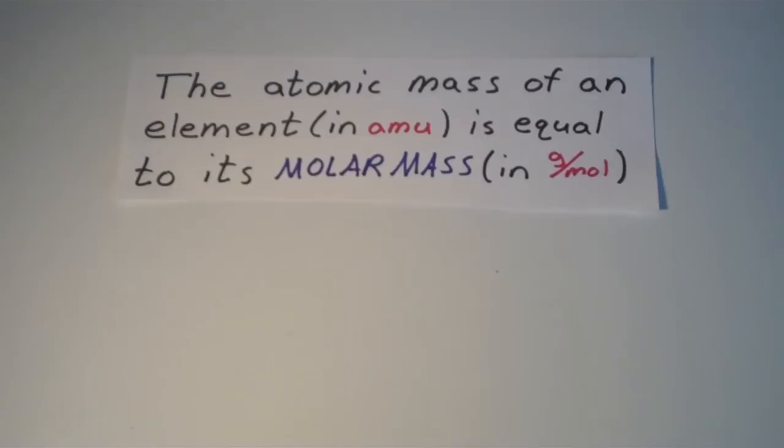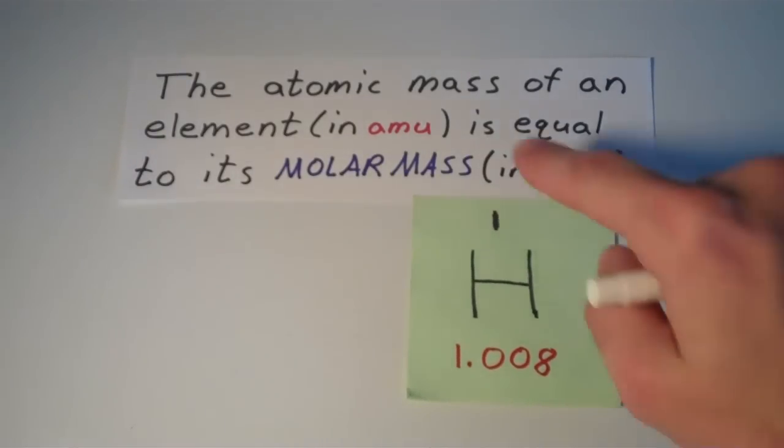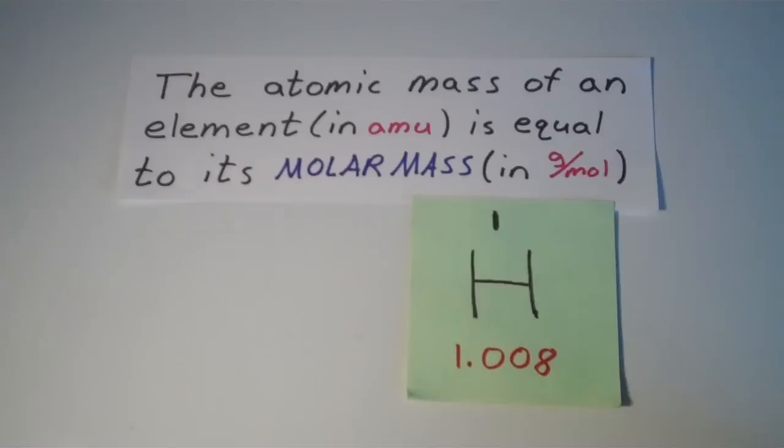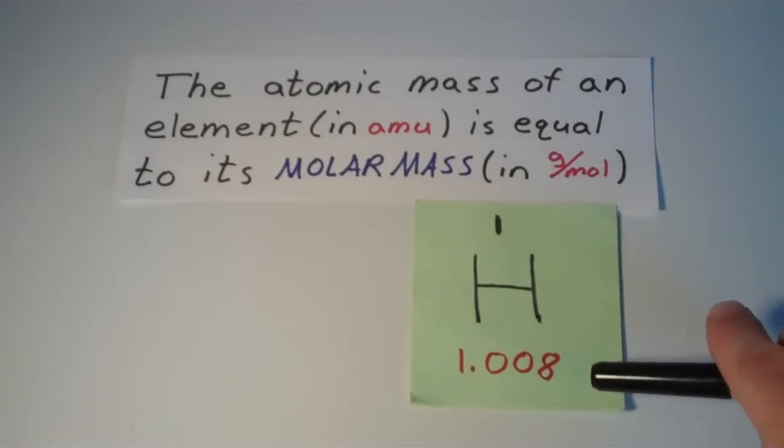So in the case of hydrogen, this number down here is not only the atomic mass of hydrogen in AMU, but it's also the molar mass of hydrogen in grams per mole. So one mole of hydrogen weighs 1.008 grams.